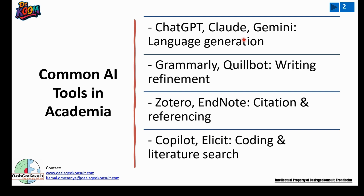Copilot and Elicit also do coding and literature reviews, which people don't take time to validate. In my opinion, these are some of the tools that students and researchers are using a lot, and they are using them in ways that create ethical problems in academia.